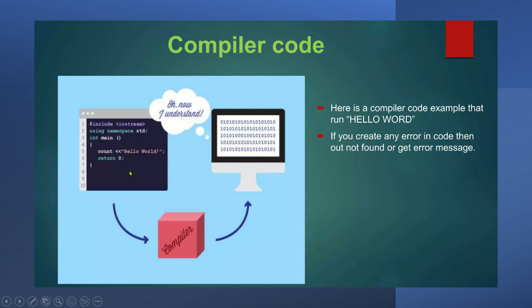A set of codes is written, and after compilation the computer is able to understand using machine language — binary language in the form of 0 and 1 bits. Here is a simple program that runs 'hello world.' If you create any error in code, you get an error message. In the compiler, the entire high level program is converted in one go, and if there is any error, it reports all the errors along with the line numbers.